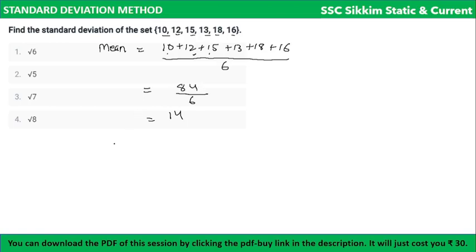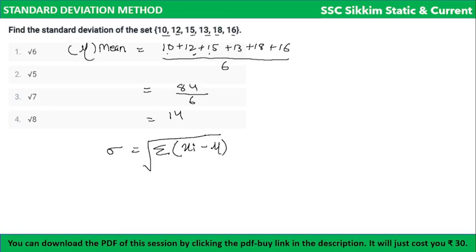Now calculate standard deviation: sigma = square root of summation of (xi − μ)² divided by n. For each value: 10 − 14 = −4, squared = 16. Then 12 − 14 = −2, squared = 4. Then 15 − 14 = 1, squared = 1. Then 13 − 14 = −1, squared = 1. Then 18 − 14 = 4, squared = 16. Then 16 − 14 = 2, squared = 4. Divided by n = 6.